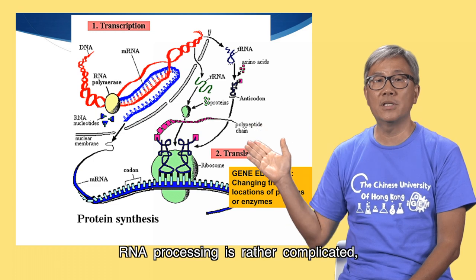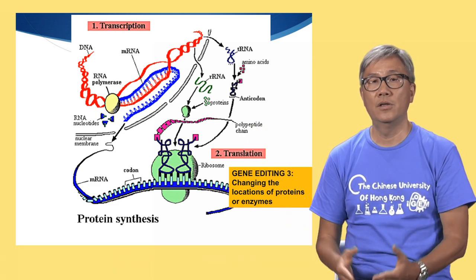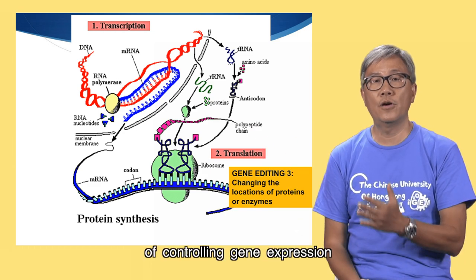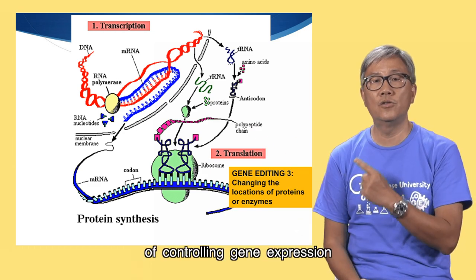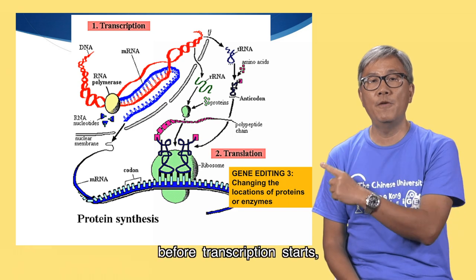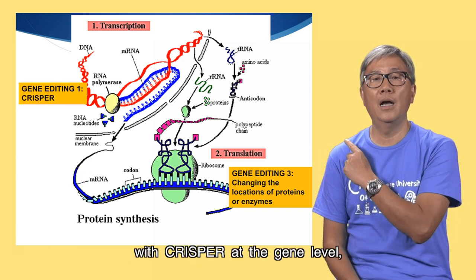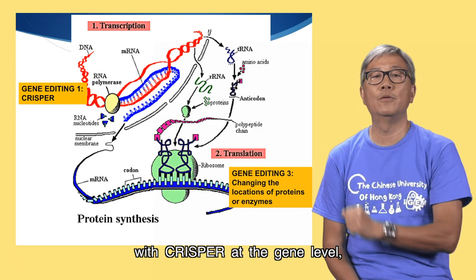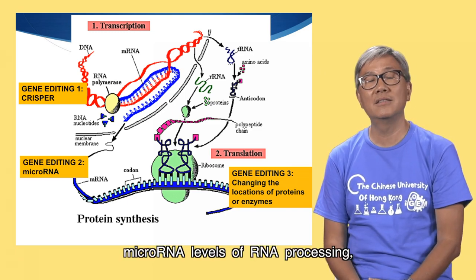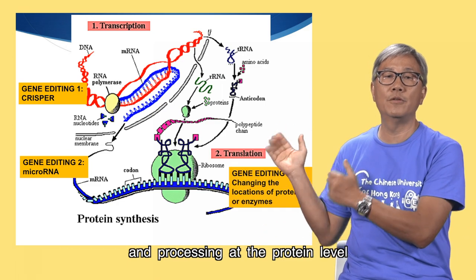RNA processing is rather complicated, so there are many different means of controlling gene expression — before transcription starts with CRISPR at the gene level, at the microRNA level of RNA processing, and processing at the protein level.